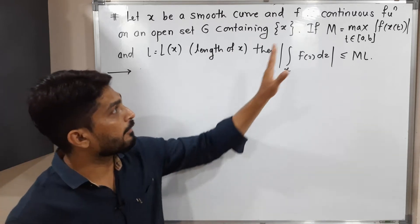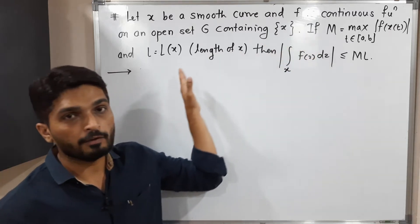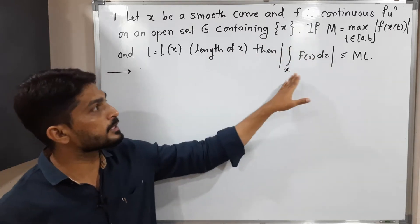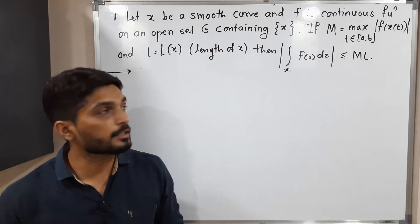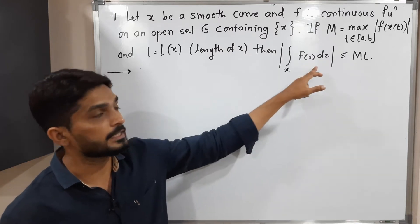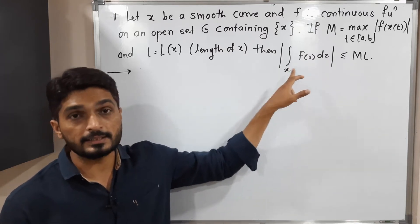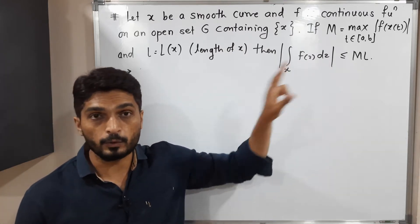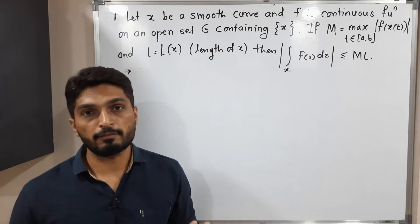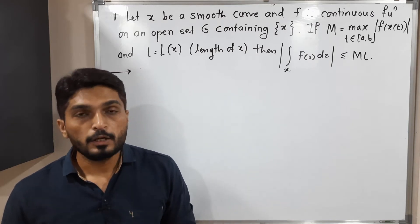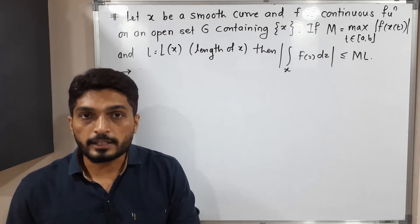So we have m and we have l, and we have to prove this inequality: mod of the integration of f of z dz over x is less than or equal to m into l. This is what we have to prove, so we will start its proof.